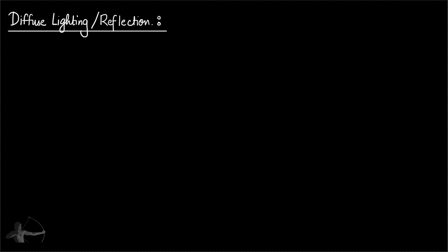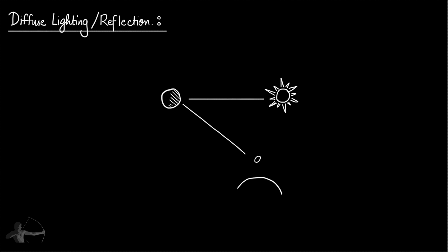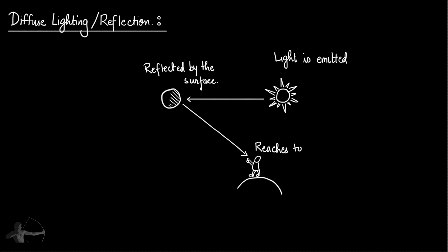If we understand the very basics of how we see something: we see something when the light is emitted by the light source, it hits the surface of the object and gets reflected and reaches our eyes. So first the light is emitted, reflected by the surface, and reaches our eyes. We don't see things that don't reflect light or that completely absorb it — every surface, to be visible, has to have the property of reflecting light.